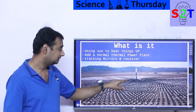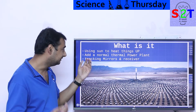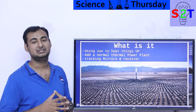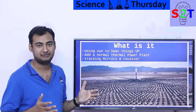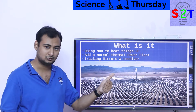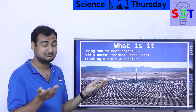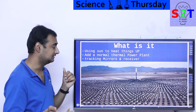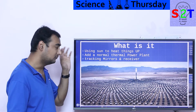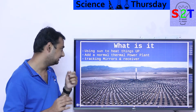We use the sun to heat something up — but what after that? We run a normal thermal power plant. If you're familiar with energy production, you know that almost everything is a thermal power plant: coal, natural gas, nuclear, even geothermal. So once we have the heat, converting that heat into electricity is the easy part.